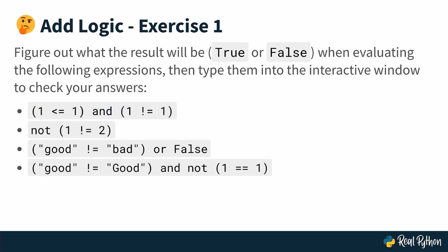We have an expression that reads: not (1 != 2). Another that reads: ('good' != 'bad') or False. And finally one that reads: ('good' != 'Good') and not (1 == 1). This is going to require a little bit more thinking — just go piece by piece, see what it evaluates to, and then move on to the next part until you come to a final conclusion. Let's do this in the interactive window in the next lesson.